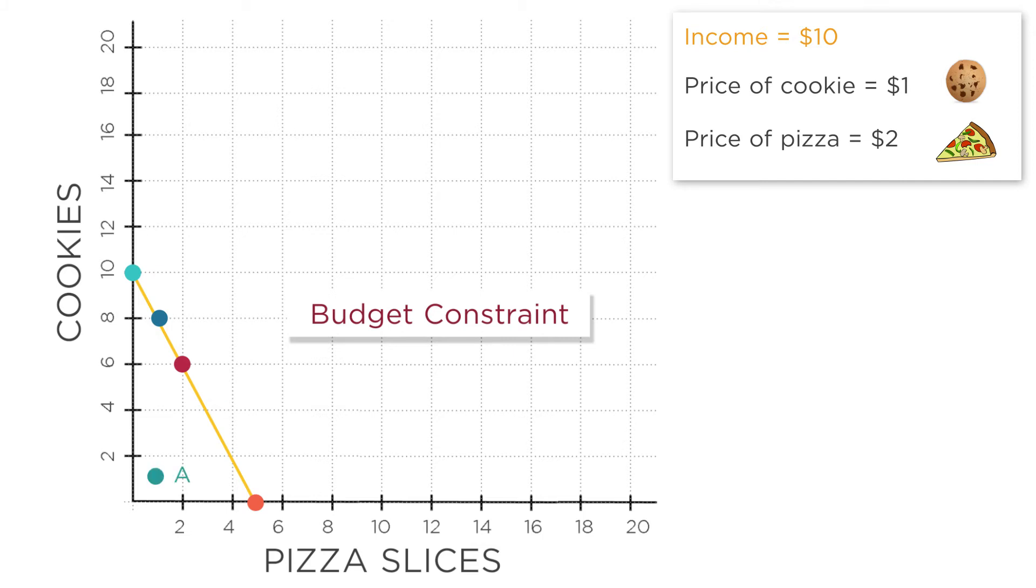Take a look at points A, B, and C. Point A represents getting one cookie and one slice of pizza. It's inside the budget constraint line. Point B represents getting four cookies and three slices of pizza. It's right on the budget line. Point C represents getting five cookies and three slices of pizza. It's outside the budget line.